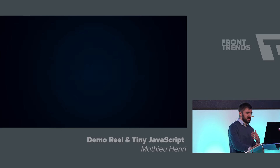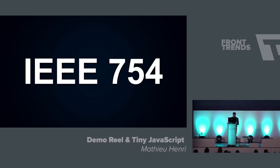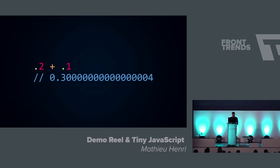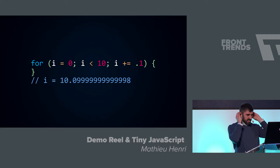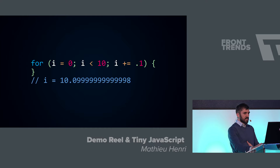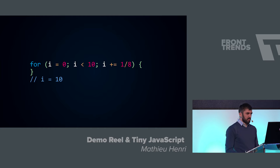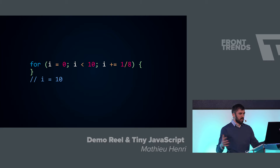You must have heard about the IEEE 754 standard, which specifies how numbers are represented in JavaScript and many other languages. Numbers are represented in binary as compositions of powers of two, which means that 0.2 plus 0.1 doesn't give you 0.3 as expected. When you loop from 0 to 10 with an increment of 0.1, the loop doesn't end exactly at 10. But if you use an increment that is a fraction of a power of 2, all numbers along the loop can be expressed exactly — letting you use strict equality on integer values and combine two loops into one.